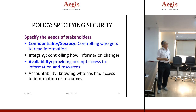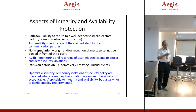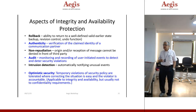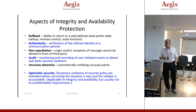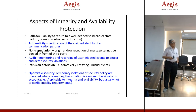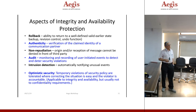There are many aspects of integrity and availability: rollback — returning to checkpoints in debugging; authenticity — verification of a claimed identity of a communication partner (on the internet, even a bot can claim to be the owner); non-repudiation — important in e-commerce, where origin and reception cannot be denied before a third party; audit — monitoring and recording user-initiated events to detect and deter security violations; and intrusion detection — automatically notifying of unusual events. There is also a notion of optimistic security: temporary violations of security policy are tolerated where correcting the situation is easy and the violator is accountable.